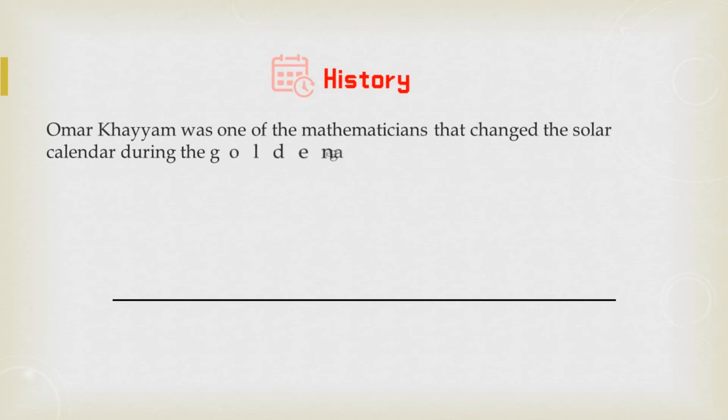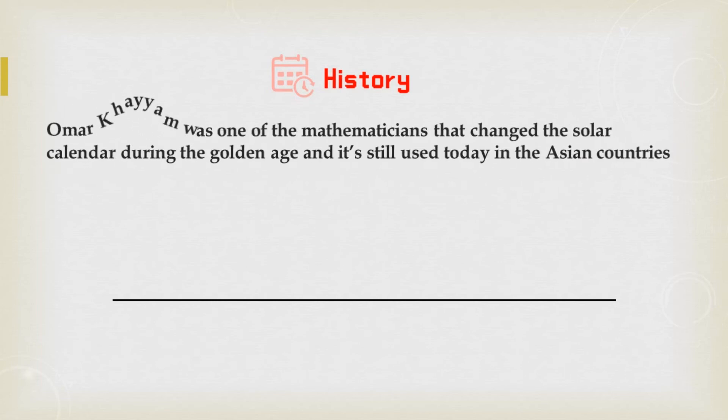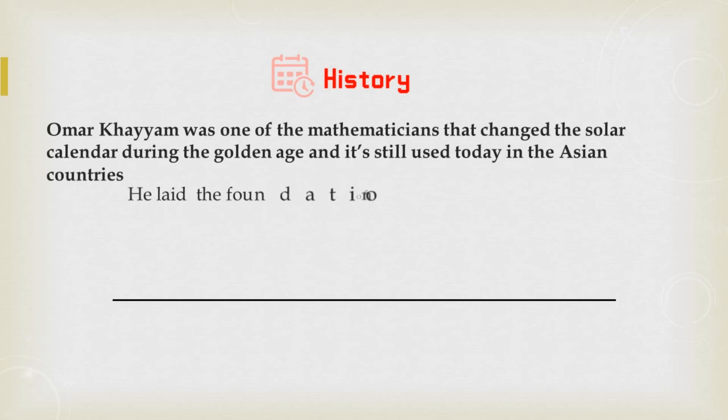Omar Khayyam was one of the mathematicians that changed the solar calendar that we have today during the Golden Age. These efforts of the new calendar are still used in some Asian countries today. Omar Khayyam laid the foundation for Pope Gregory's astronomer to follow.